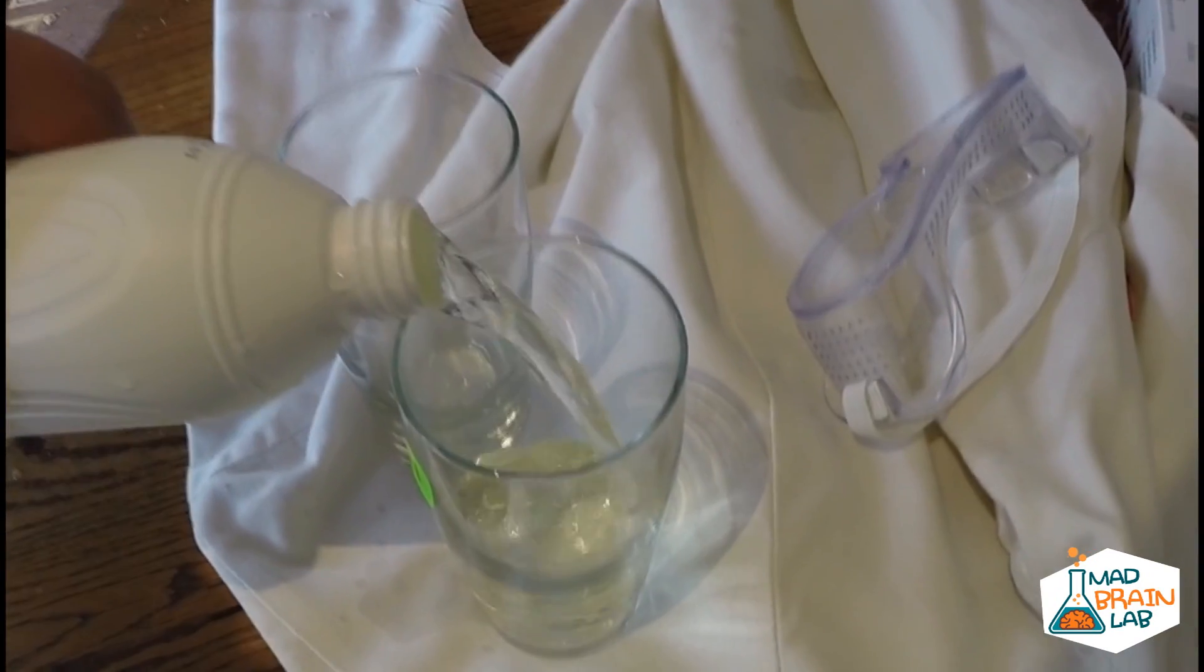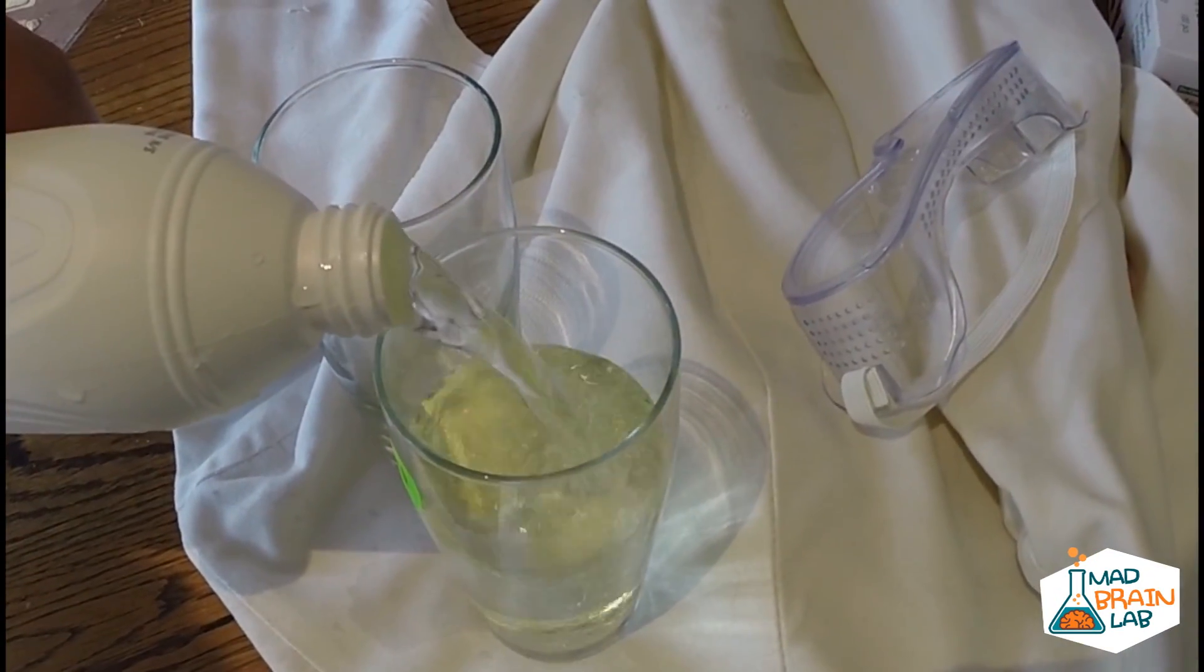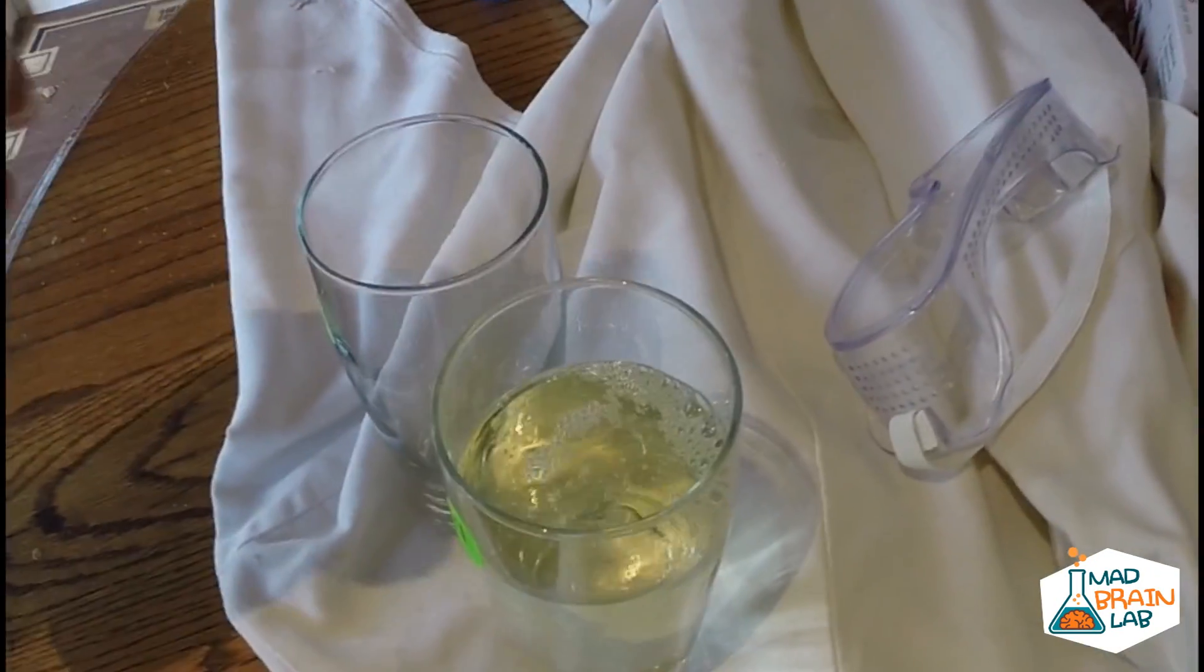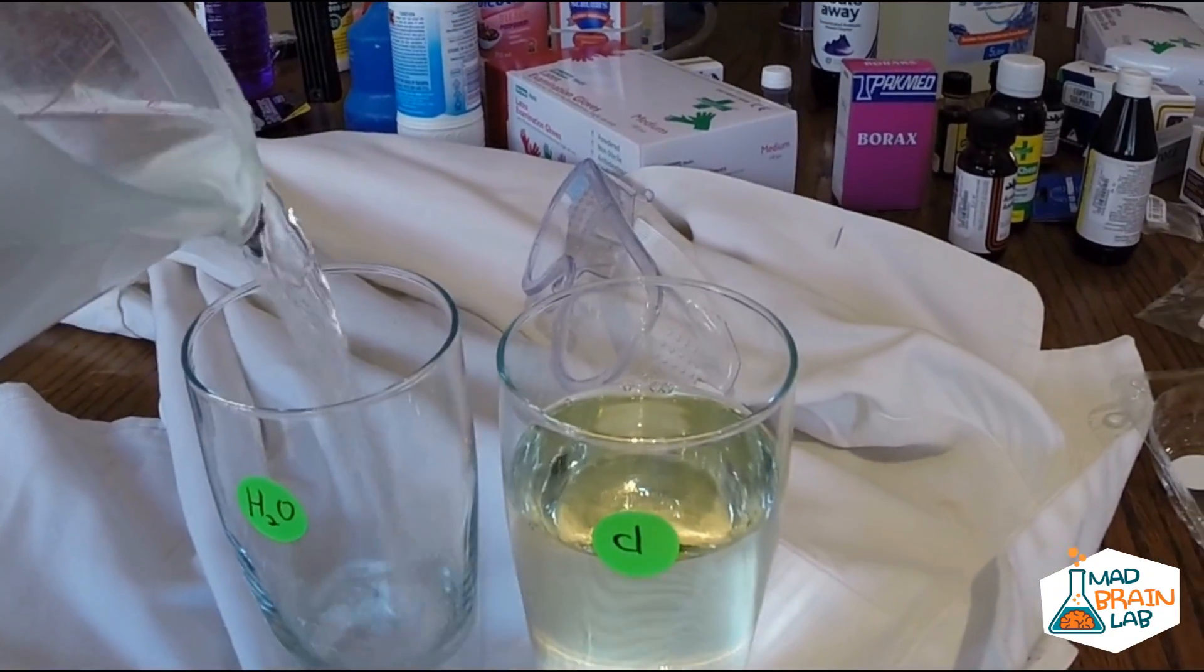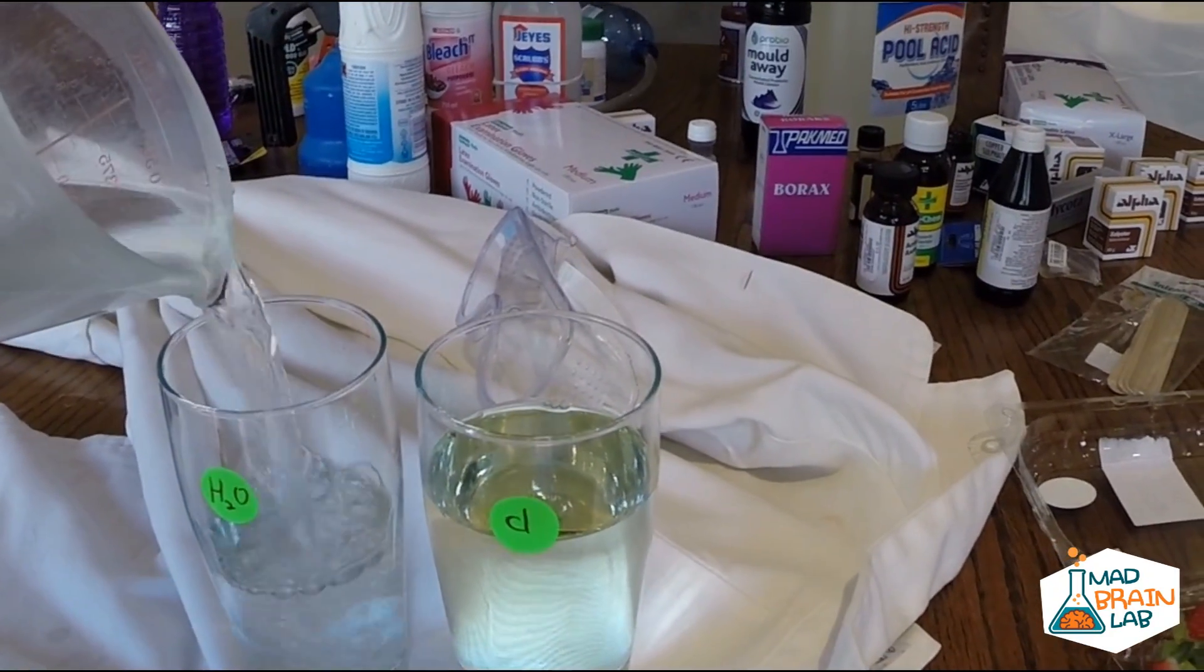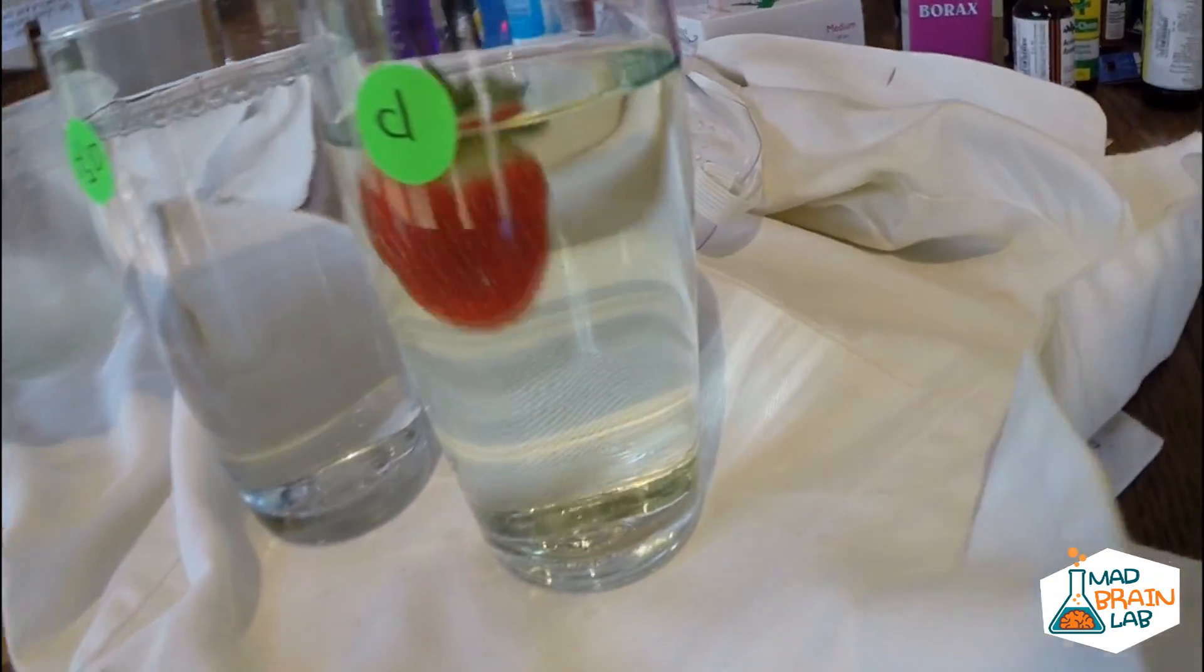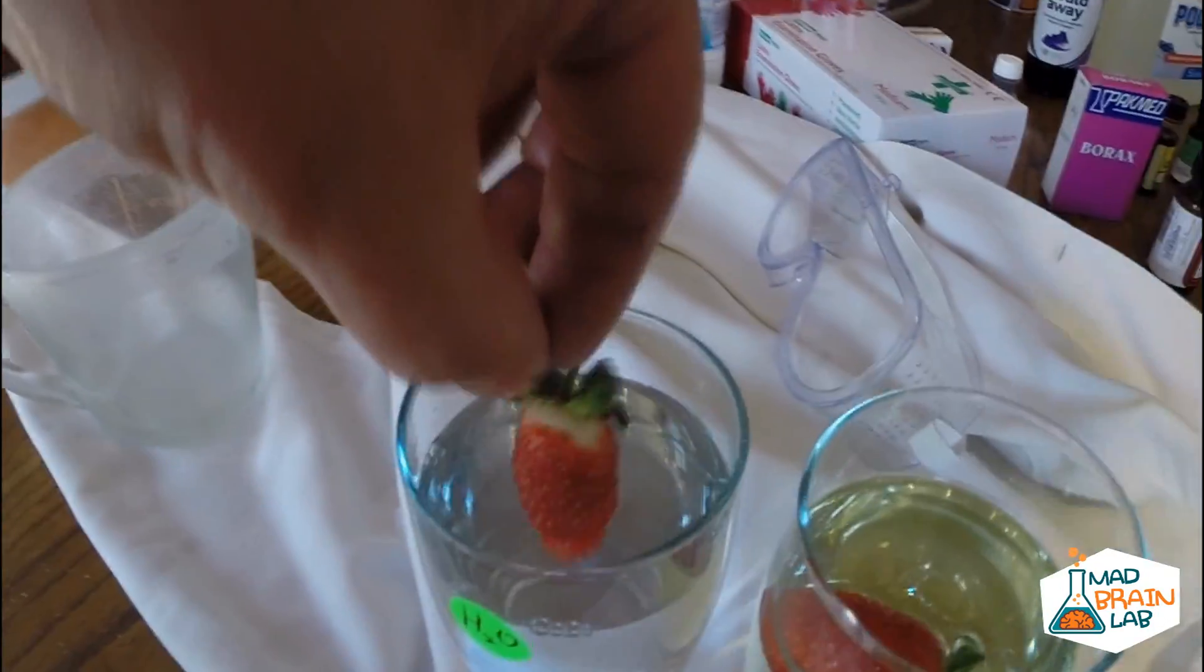Here we have a simple experiment to show the destructive nature of oxidation and free radicals. In the one glass we have sodium hypochlorite, also known as bleach. This is a strong oxidizing agent. In the other control glass we will add normal tap water. Now we add a strawberry to both glasses and wait 10 hours.